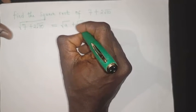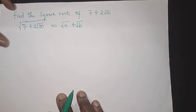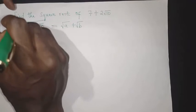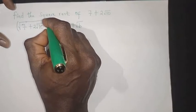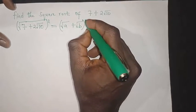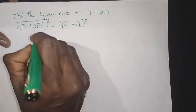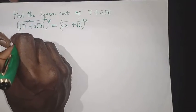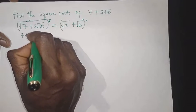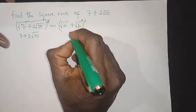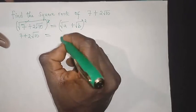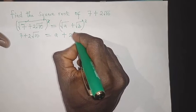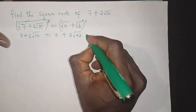Let the square root be equal to root a plus root b. Now I'm going to take the square of both sides. The square of the left side will cancel the square root, so I'm left with 7 plus 2 root 10. Then root a plus root b squared gives me a, plus 2 root ab, plus b.